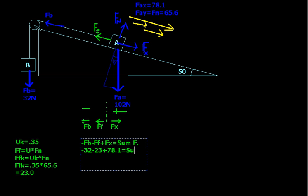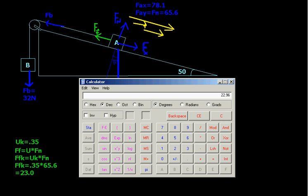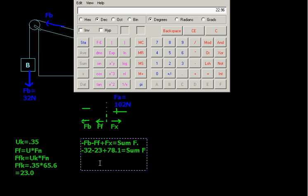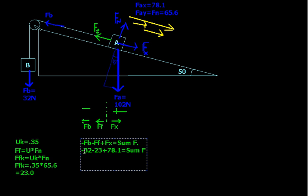And that's equal to the sum of the forces. Well, let's just do this. What's 32 and 23? These are both negatives, so we can combine these. We have negative 55, right? Because 32 and 23. So negative 55 plus 78.1. That's the same as saying 78.1 minus 55, which is going to be equal to 23.1. So 23.1 is our final force.